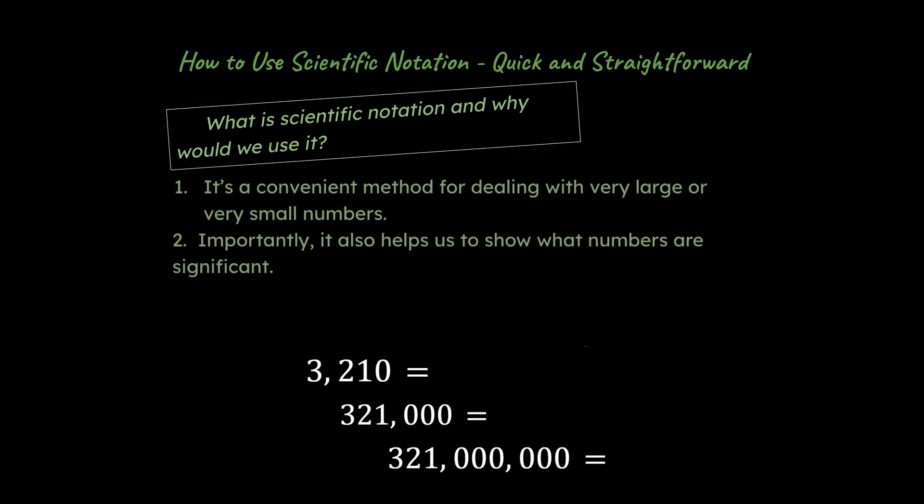So first of all, scientific notation is a convenient method for dealing with very large or very small numbers. We use this in science all of the time, and so it's important to get a handle on what this is. Importantly, it also helps us to show what numbers are significant. And so I've talked more about that in other screencasts. I'll put a link to that in the upper right right about now. But let's get back to scientific notation.